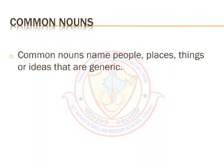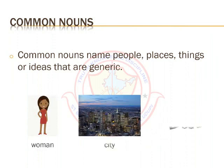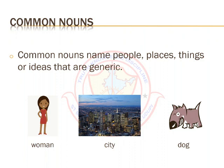Common nouns name people, places, things or ideas that are generic — like woman, city, dog. Notice that we don't know exactly which woman, city or dog we are referring to. Since these nouns are not naming anything specific, they don't need to start with a capital letter unless they begin a sentence.